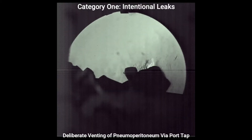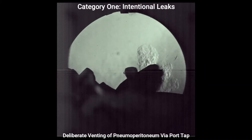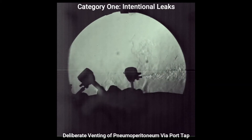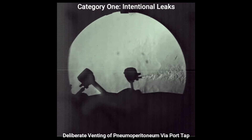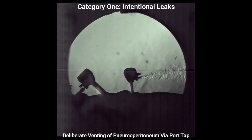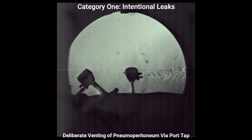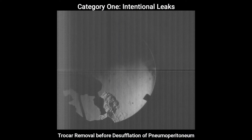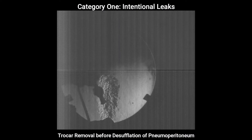The first category is leaks that result from intentional actions by the surgeon. One example is opening the tap at a trochar to vent gas to clear smoke from the internal operative field in the presence of a pneumoperitoneum. Another example is removal of ports without prior desufflation of the pneumoperitoneum.